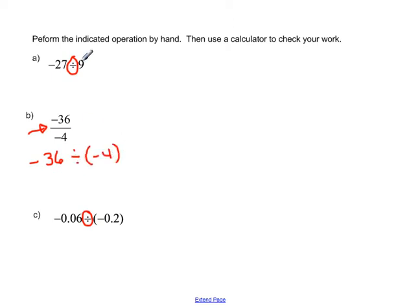Just like this first problem, we could have rewritten as negative 27 divided by 9. So just different ways of saying the same thing.